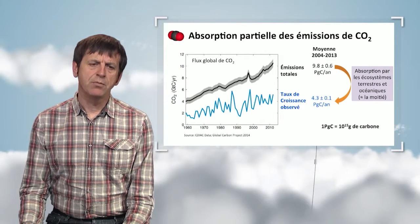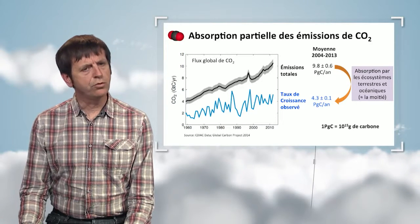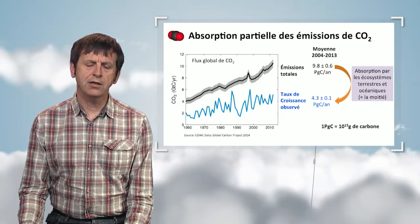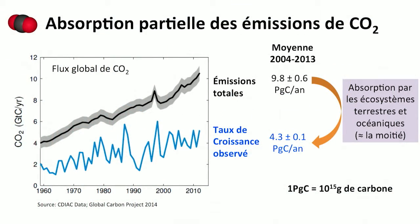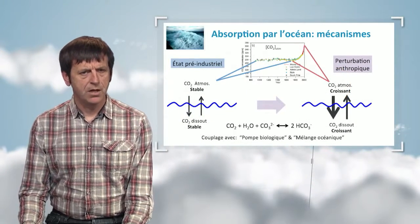Ever since the beginning of the 1960s, it has been possible to measure CO2 concentrations in the atmosphere and the increase thereof over time. We can calculate the quantity of CO2 accumulating in the atmosphere, which corresponds to the blue curve — the observed growth rate. Apparently, this is about half of the carbon emissions due to human activity, which means that land and oceanic ecosystems are absorbing about half of the CO2 emissions due to man.